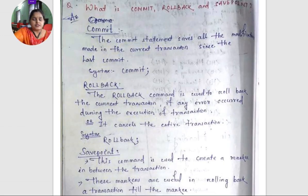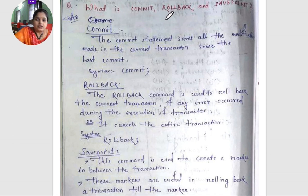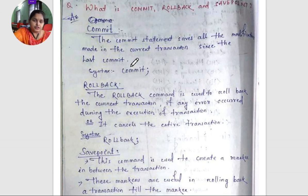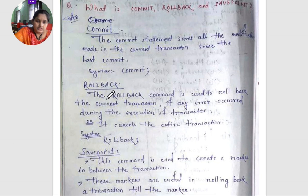Next question: what is commit, rollback, and savepoint? The COMMIT statement saves all the modifications made in the current transaction since the last commit. It permanently saves all the changes in the entire transaction. The syntax is: COMMIT semicolon.